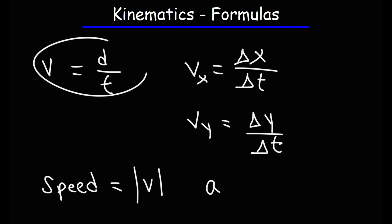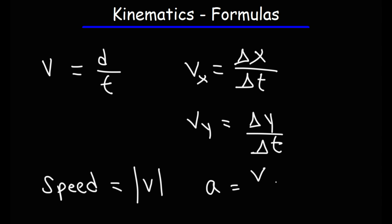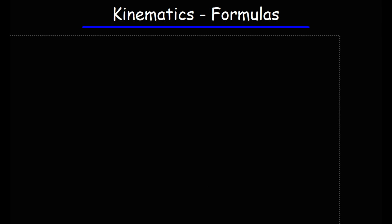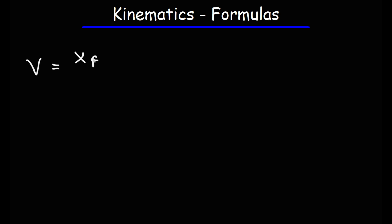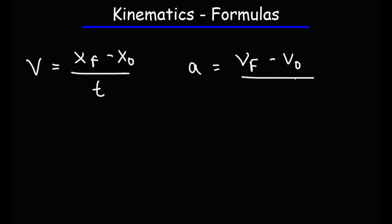Just as velocity is the rate of change of displacement over time, acceleration is the rate of change of velocity over time — it's delta v over delta t. You can calculate velocity by taking the final position minus the initial position divided by the time. Acceleration is very similar: it's the final velocity minus the initial velocity divided by the time.